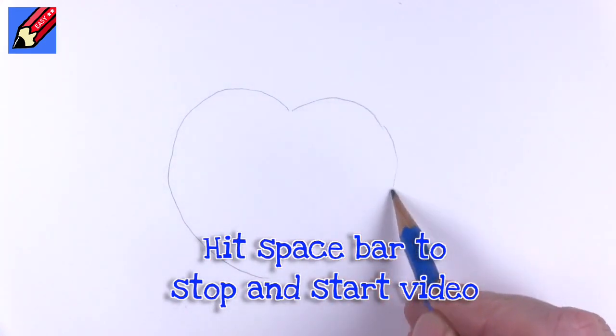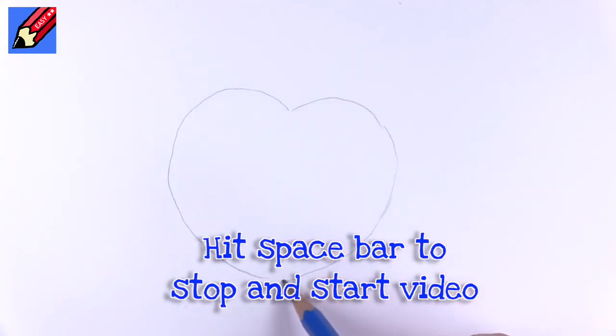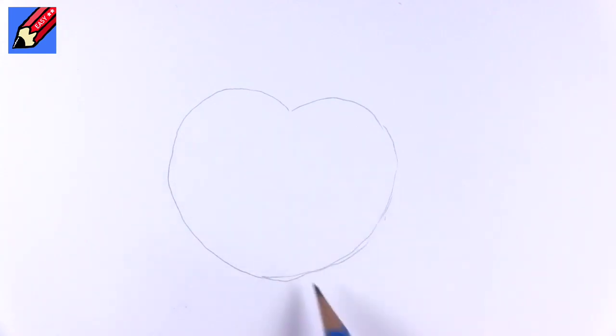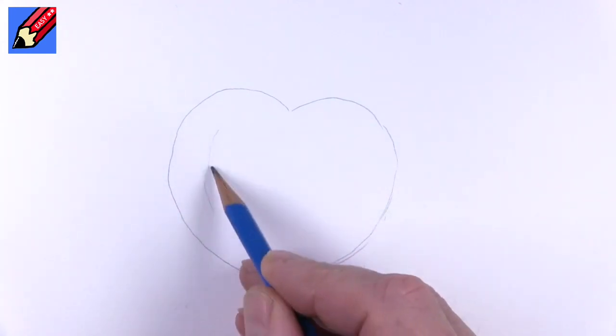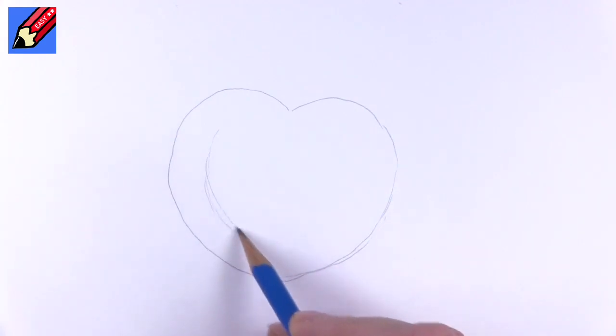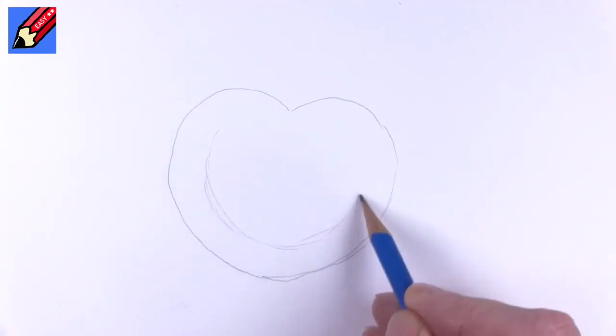It's like a heart but without a point at the bottom, and then we can draw this kind of circle shape like that. Very gently, let's draw an inner kind of circle to give us an idea of the thickness of our pretzel.